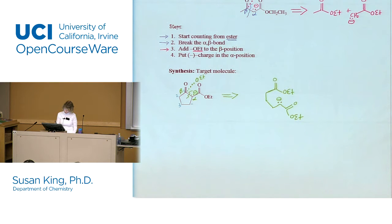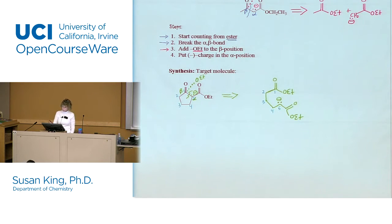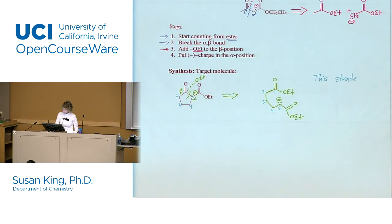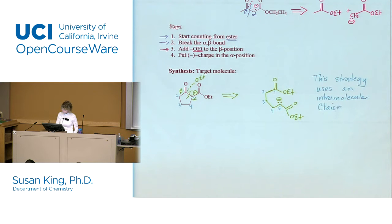Let me count those carbons: one, two, three, four, five — and that matches. So if I'm going to make that compound, it would have to be an intramolecular reaction. We know that five- and six-membered rings form really easily in an intramolecular reaction. This strategy uses an intramolecular Claisen condensation, also known as a Dieckmann condensation. So in this carbonyl chemistry we do have a lot of name reactions. The Dieckmann condensation is an intramolecular Claisen.